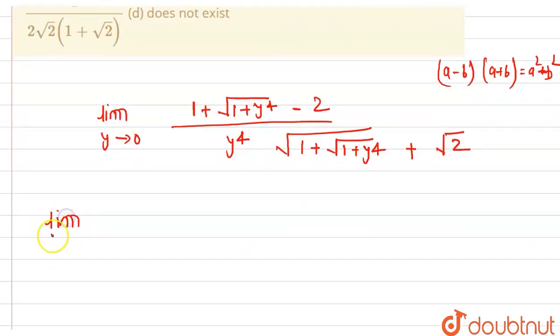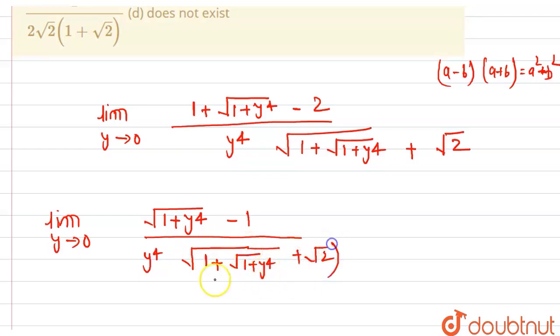Limit y tending to 0. This will be √(1 + y⁴) minus 1 and in the denominator we have this as y⁴(√(1 + √(1 + y⁴)) + √2). So this is one term.